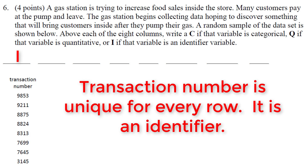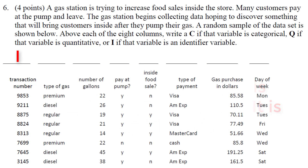Identifiers can have letters in them too — this could be transaction number 9853QQ4. It's just going to be a unique combination for each row. So transaction number is an identifier.